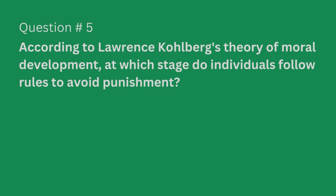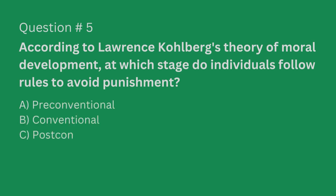Question number five. According to Lawrence Kohlberg's theory of moral development, at which stage do individuals follow rules to avoid punishment? A. Pre-conventional. B. Conventional. C. Post-conventional. Or D. Autonomous.